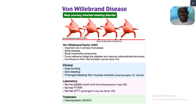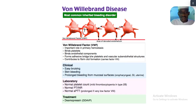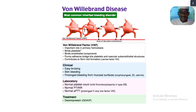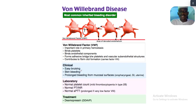Von Willebrand disease is the most common inherited bleeding disorder. Von Willebrand factor connects two platelets together — without it, platelets cannot aggregate. VWF plays an important role in primary hemostasis: it binds platelets, binds endothelial components, forms an adhesive bridge between platelets and vascular subendothelial structures, and contributes to fibrin clot formation. It also carries Factor VIII.